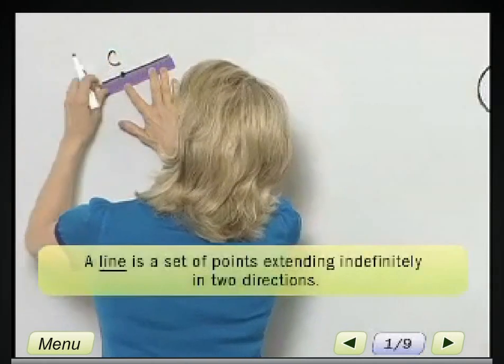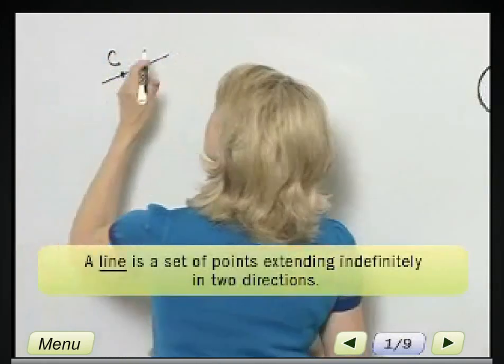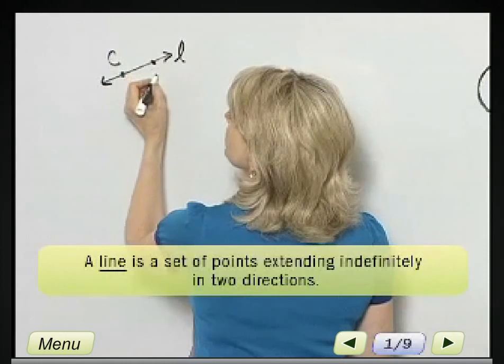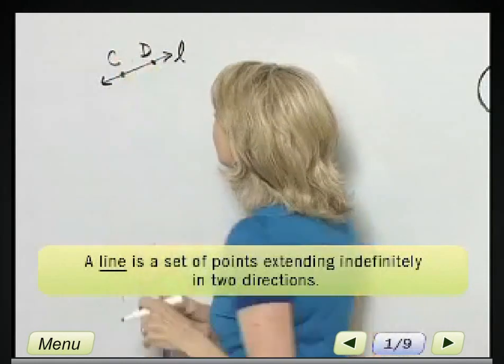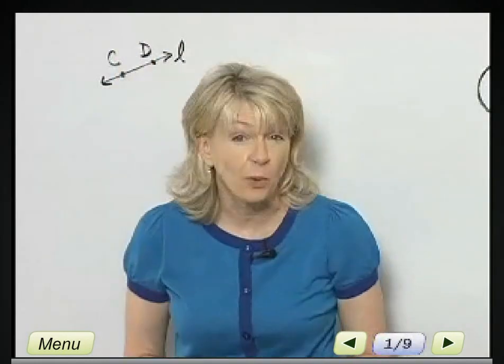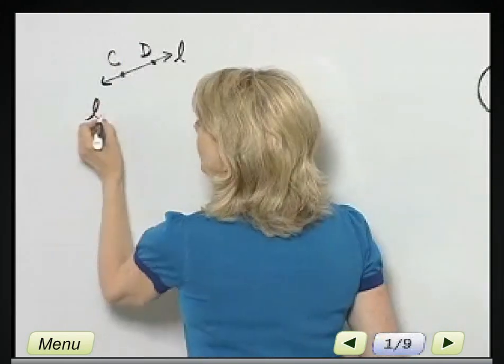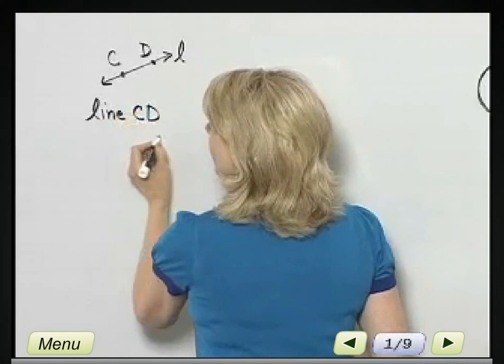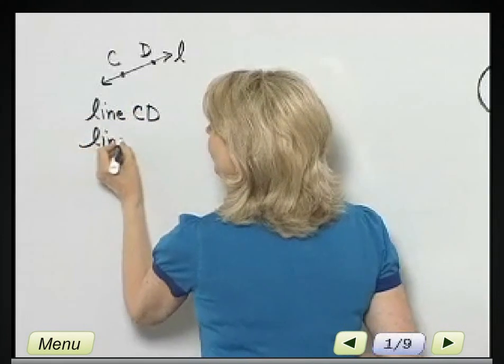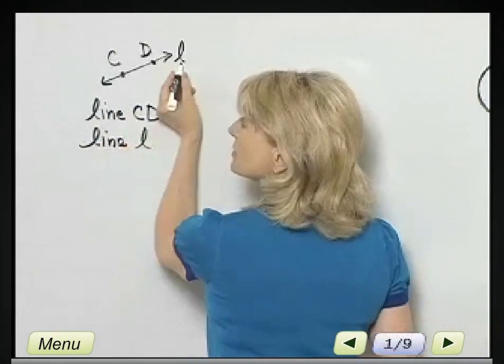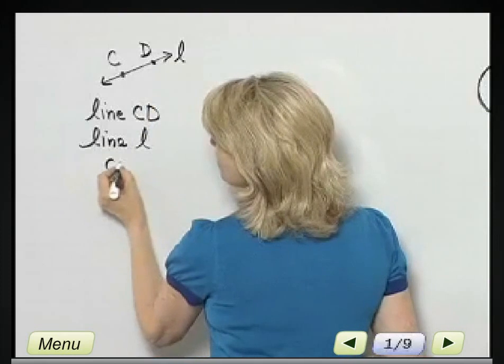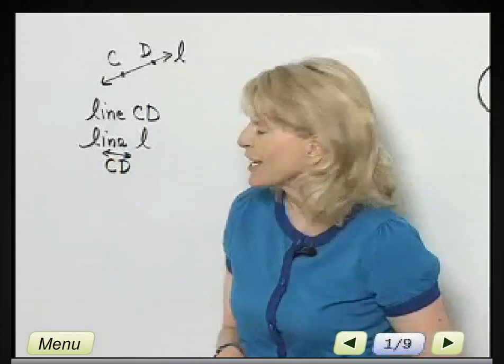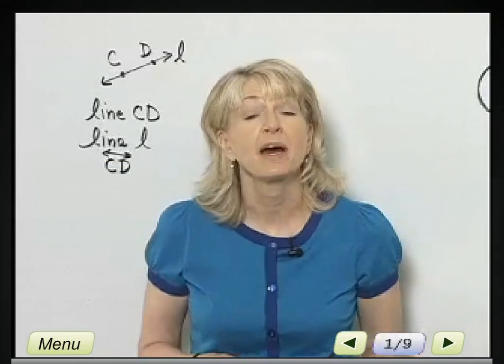A line extends indefinitely in two directions, and there are many ways of designating a line. You can do so by two points of the line. So I can call this line CD. I can call this line L. Notice I've also called it L. I can also just use this notation CD with a line above it. So there's a little bit about a line.